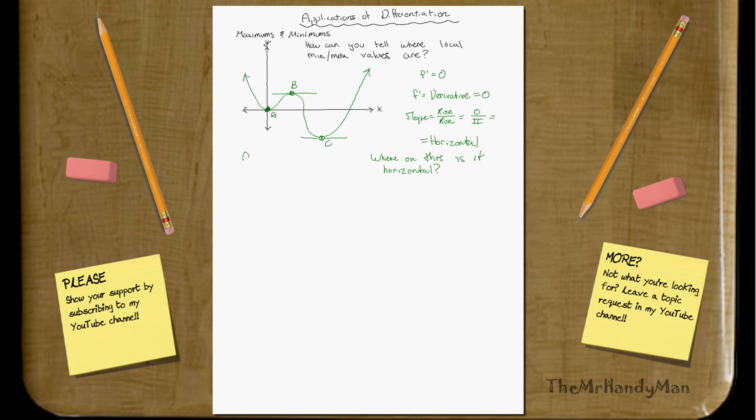So points A, B, and C are instances where f prime equals zero. And the only thing that f prime equals zero states is that it is either, first of all, it's a local maximum or minimum.